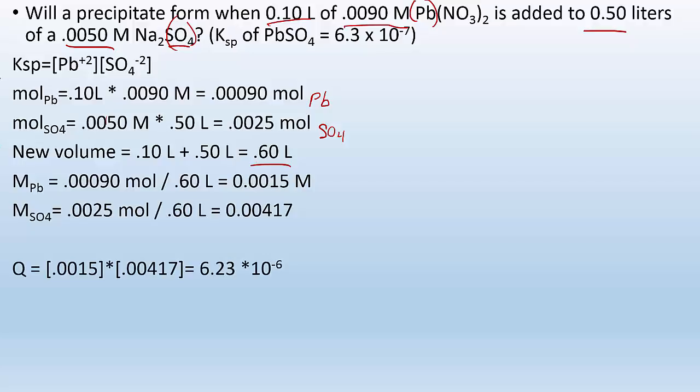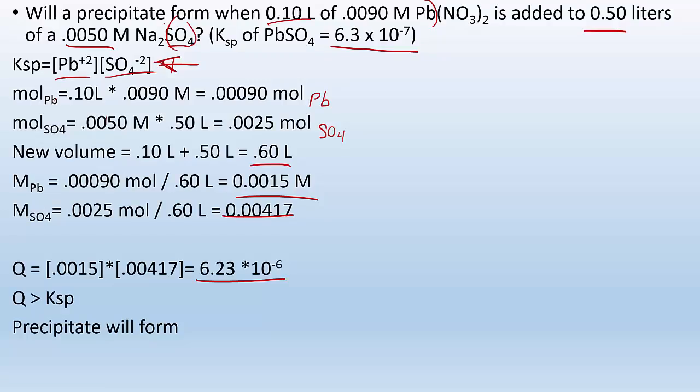So now I've got to plug it in. Q is simply the Ksp expression with these numbers plugged into it. So I plug those numbers in the appropriate places and I get 6.23 times 10 to the minus 6. Now I'm going to compare that to my Ksp. Here Q is greater than the Ksp. So that tells me I've got too many products. I've got too many ions. So I'm going to have to get a precipitate to get some of them out. So a precipitate will form.